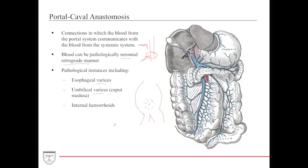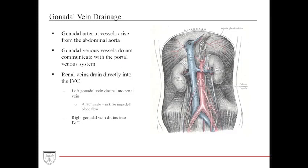The rectum has shared blood supply and drainage from both the portal and systemic systems, which can lead to internal hemorrhoids. Regarding the gonadal veins: the gonadal vessels do not communicate with the portal venous system but connect directly to the IVC via the renal veins. The left gonadal vein drains into the left renal vein, while the right gonadal vein drains directly into the IVC. The left gonadal vein drains at a 90-degree angle into the renal vein, creating a more difficult path of blood flow — a site of potential thrombosis or venous stasis predisposing to varicocele, with a hallmark presentation described as a bag of worms.